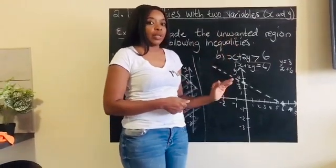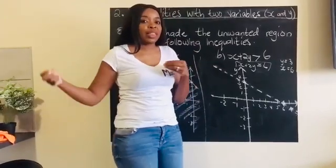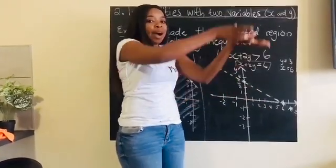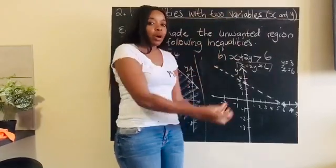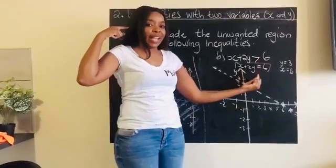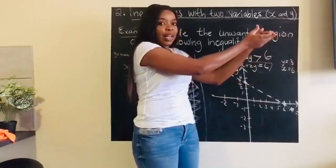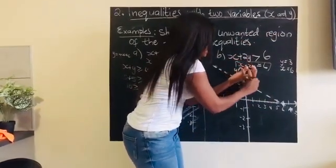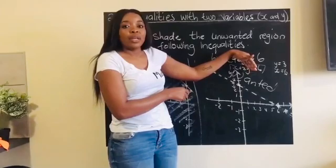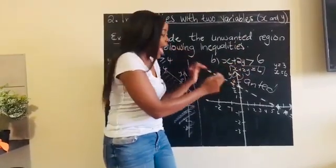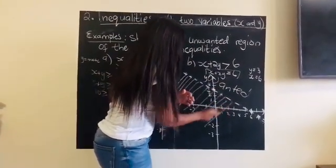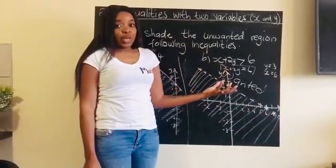You've now drawn your graph with a broken line because of the strict inequality. You now need to figure out your unwanted region. Using the shorter method — above the graph is 'greater than,' below is 'less than.' I was given 'greater than,' so the region above the line is my wanted region. Just because the wanted region is above in both examples doesn't mean it's always above — that's just a coincidence here.